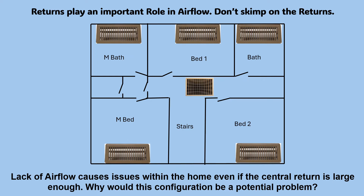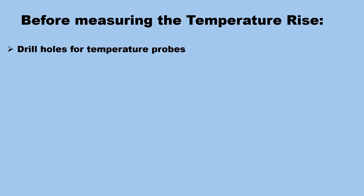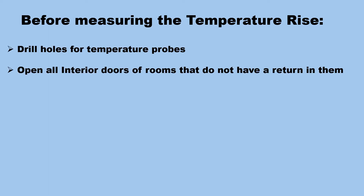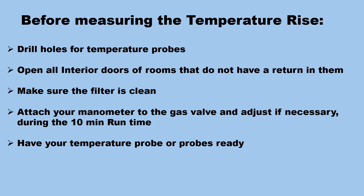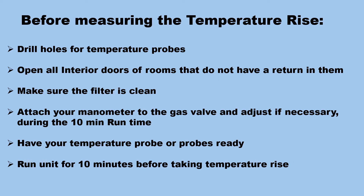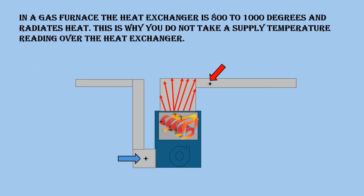And as you'll see here in a minute, it even tells you in the process of doing a temp rise to make sure that all doors are open. Before measuring the temperature rise, drill holes for temperature probes. Open all interior doors of rooms that do not have a return in them. Make sure the filter is clean. Attach your manometer to the gas valve and adjust if necessary during the 10-minute runtime. Have your temperature probe or probes ready. Run the unit for 10 minutes before taking the temperature rise. In a gas furnace, the heat exchanger is 800 to 1,000 degrees and radiates heat — this is why you do not take a supply temperature reading over the heat exchanger.